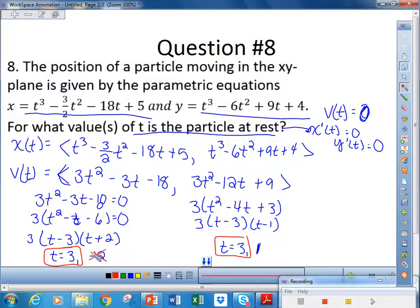We can disregard negative 2 altogether. No, we can't. I thought it said somewhere where t had to be greater than zero. But anyway, it's going to be at rest when both the x component and the y component are zero. And that only happens at t equals 3. And that is questions 5 and 8.